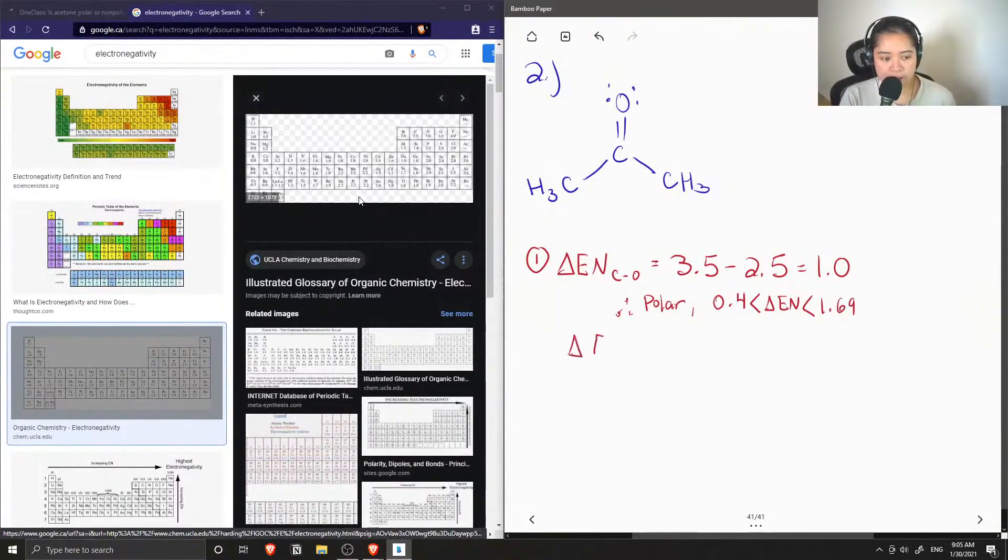Now let's calculate the electronegativity difference of a carbon and hydrogen bond. Carbon's electronegativity is 2.5, and hydrogen's is 2.1. So their difference is only 0.4. So the carbon-hydrogen bond is nonpolar.